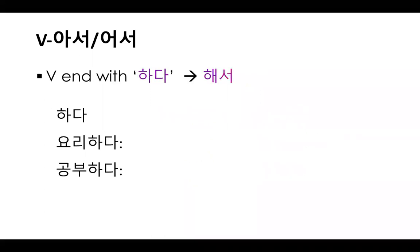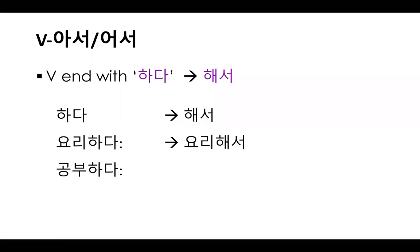If the verb ends with 하다, you change it to 해서. So 하다 changes to 해서. 요리하다 changes to 요리해서, and 공부하다 changes to 공부해서.